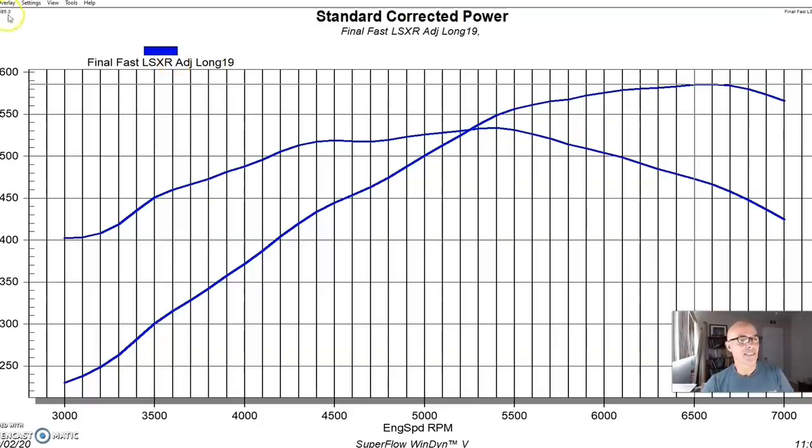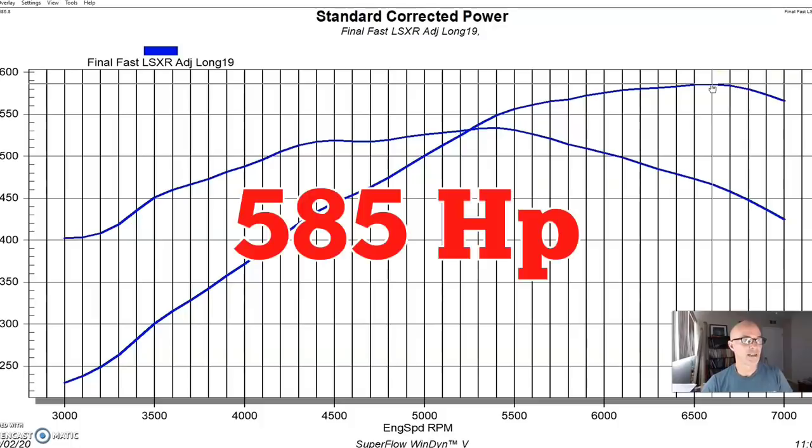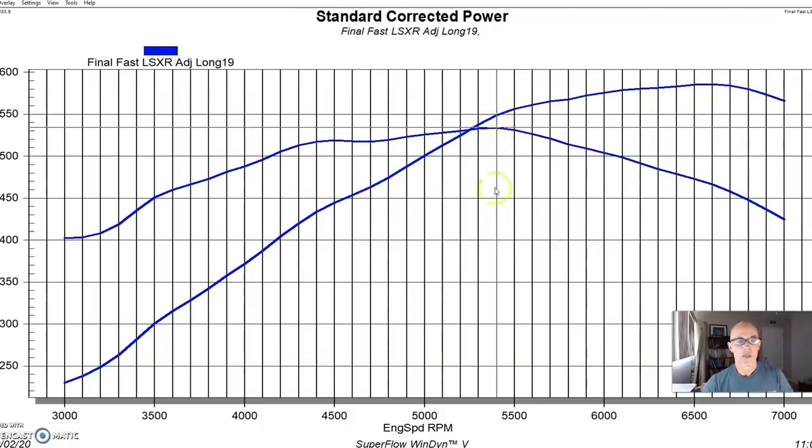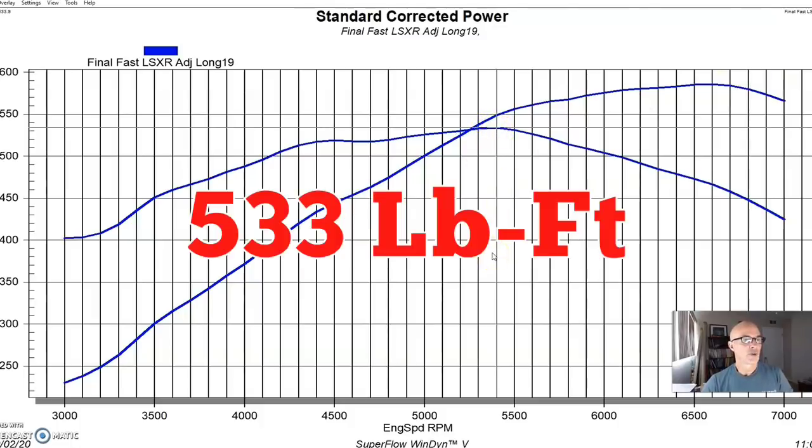We ran the Fast intake on our cammed crate motor, produced 585 horsepower and 533 foot-pounds of torque.